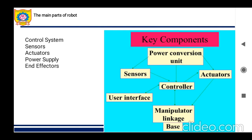Humans get energy from food; robots get energy from electricity. Moving robots are powered by batteries. Robot space probes and satellites are often designed to collect solar power. AC motors and DC motors are also used to provide power — they are electromechanical components that convert electrical energy into mechanical energy, providing rotational movement.